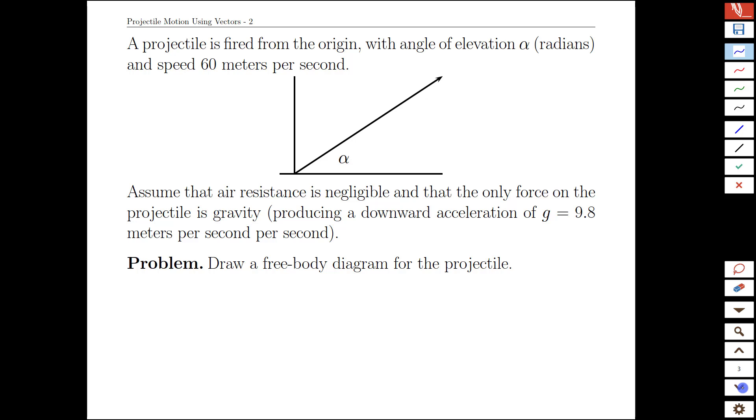Let's start off with what we know. We'll make it more concrete by having a variable angle, but we're going to fix the speed, not the velocity, we're going to fix the speed at 60 meters per second for this projectile.